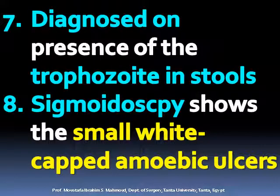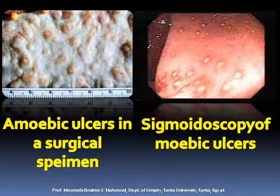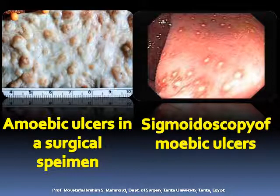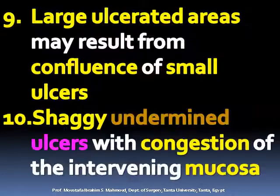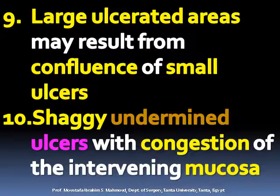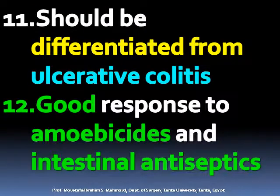Diagnosis is made on the presence of the trophozoite in the stools. Sigmoidoscopy shows small, wide-based amoebic ulcers. Large ulcerated areas may result from confluence of small ulcers, showing shaggy undermined ulcers with congestion of the intervening mucosa. Should be differentiated from ulcerative colitis.